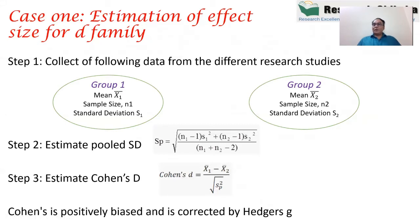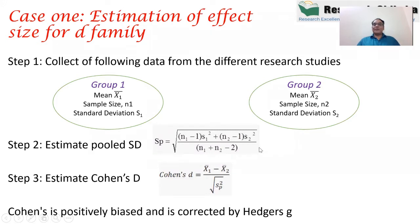When writing a meta-analysis paper on the d family, you have to find published papers where these values — mean, sample size, standard deviation — are given for both groups. In medical science this is very common — researchers find the effect of a vaccine by dividing patients into two groups and comparing outcomes. Step one in the d family is to collect this dataset from different published research papers. Step two is to calculate the pooled standard deviation.